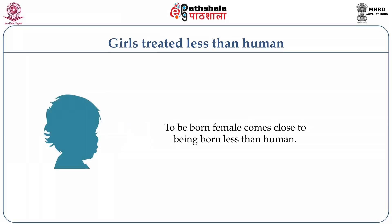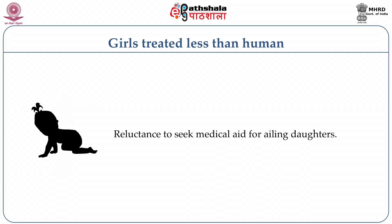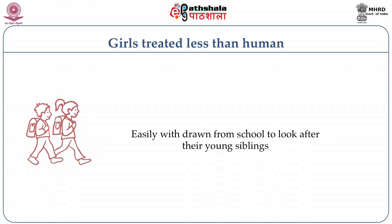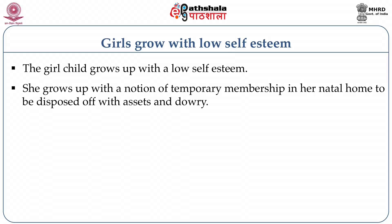Many girls are treated as being born less than human. There is female infanticide; discrimination begins even before birth. There is a reluctance to seek medical aid for daughters. They are breastfed for a shorter duration than boys. They are easily withdrawn from school to look after younger siblings. There is so much bias, and the girl child grows with a very low self-esteem in contemporary India. She grows with a notion of temporary membership in her natal home and has to be disposed of with assets and dowry.